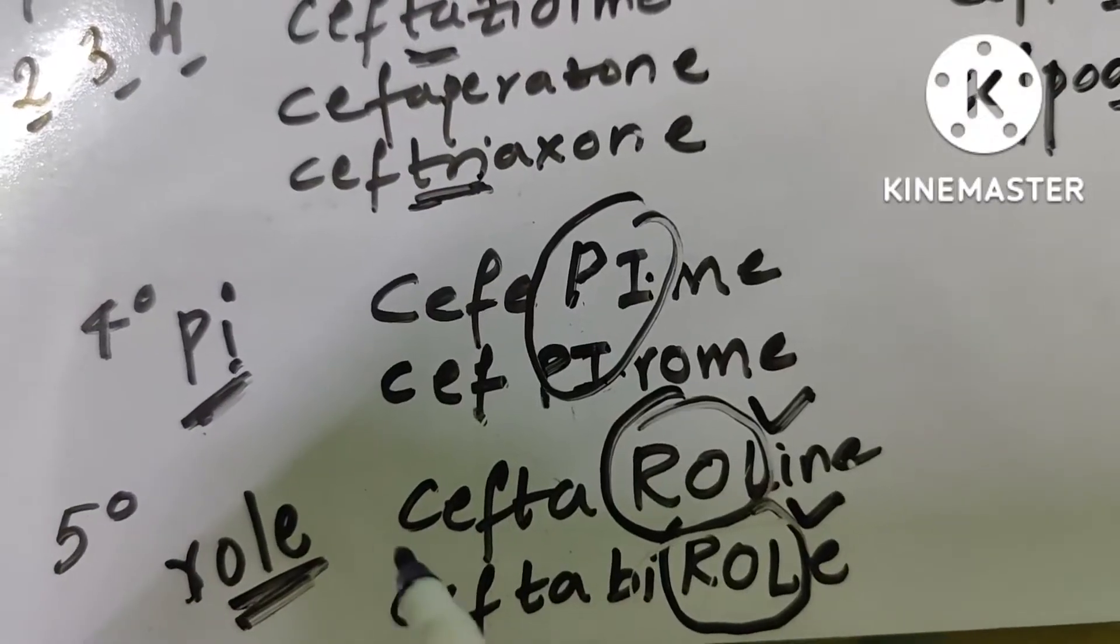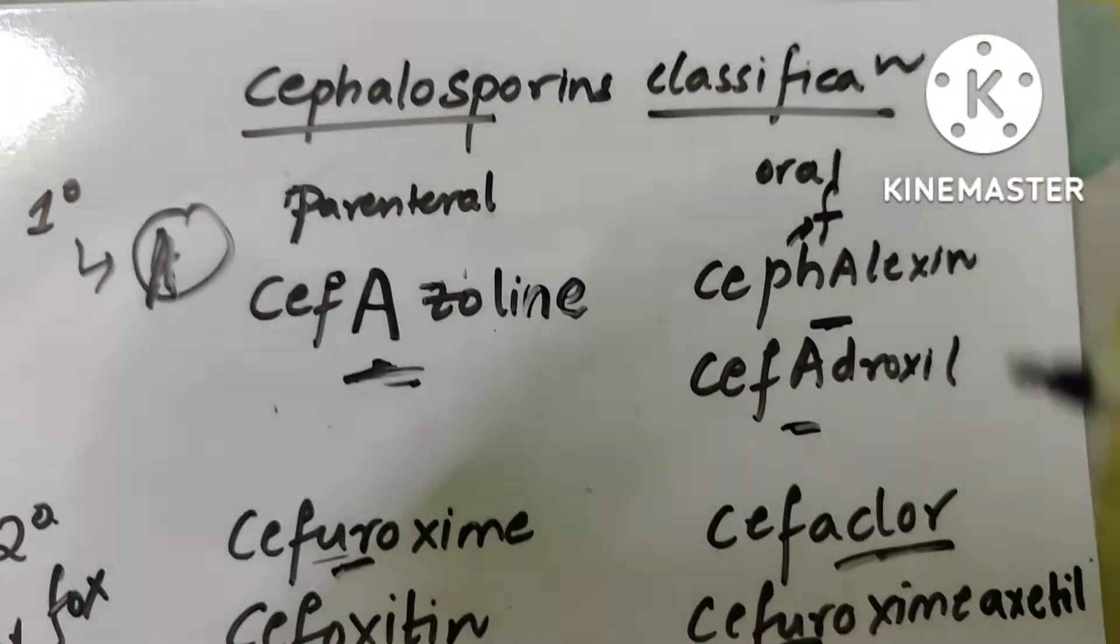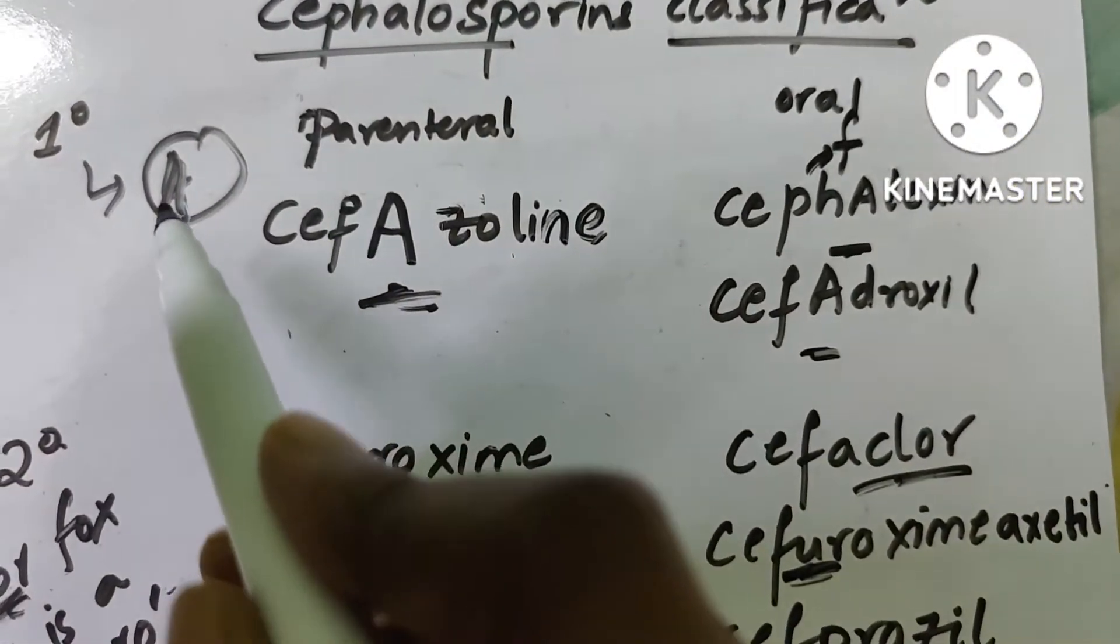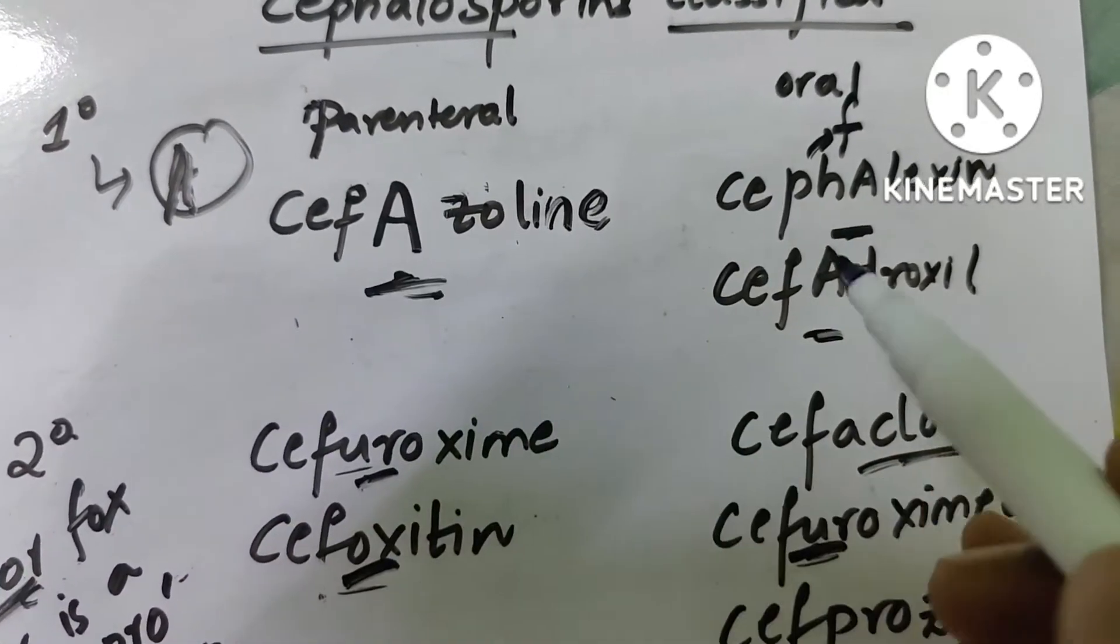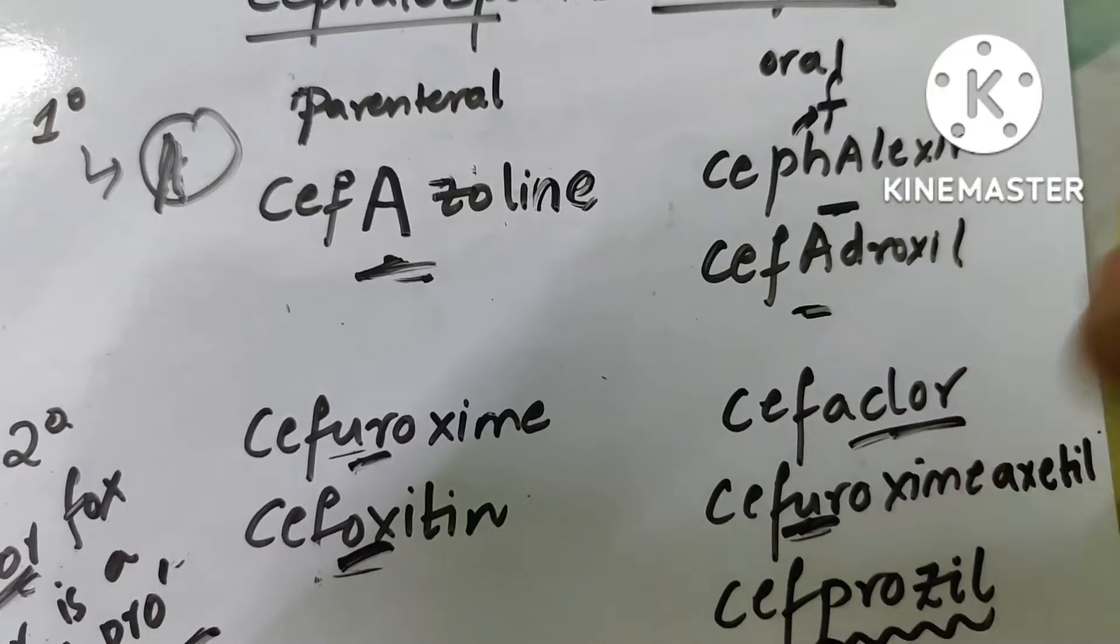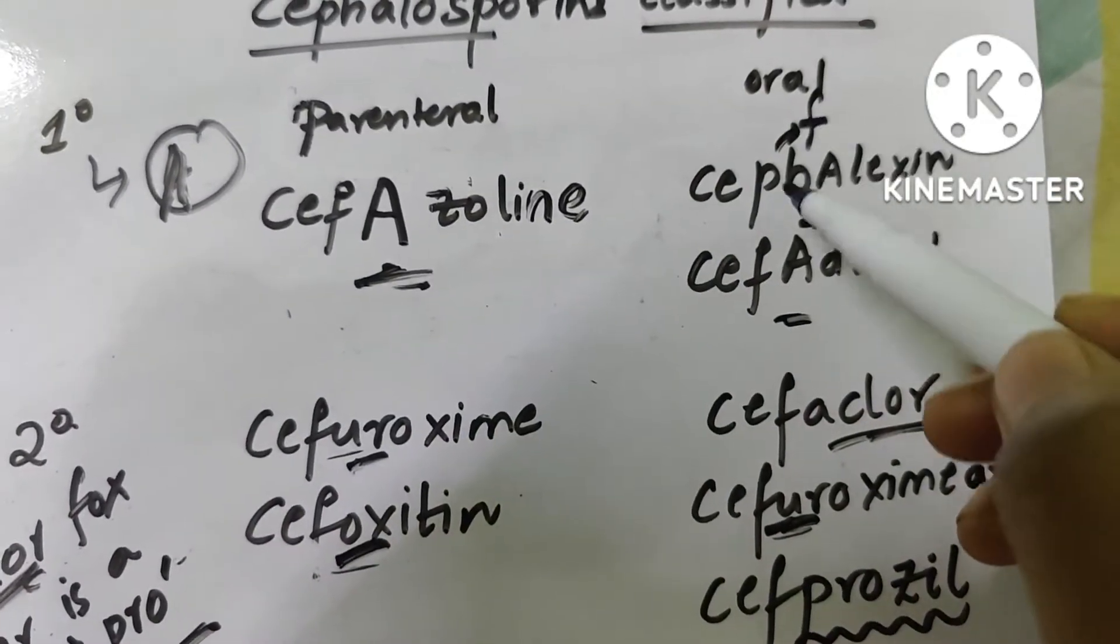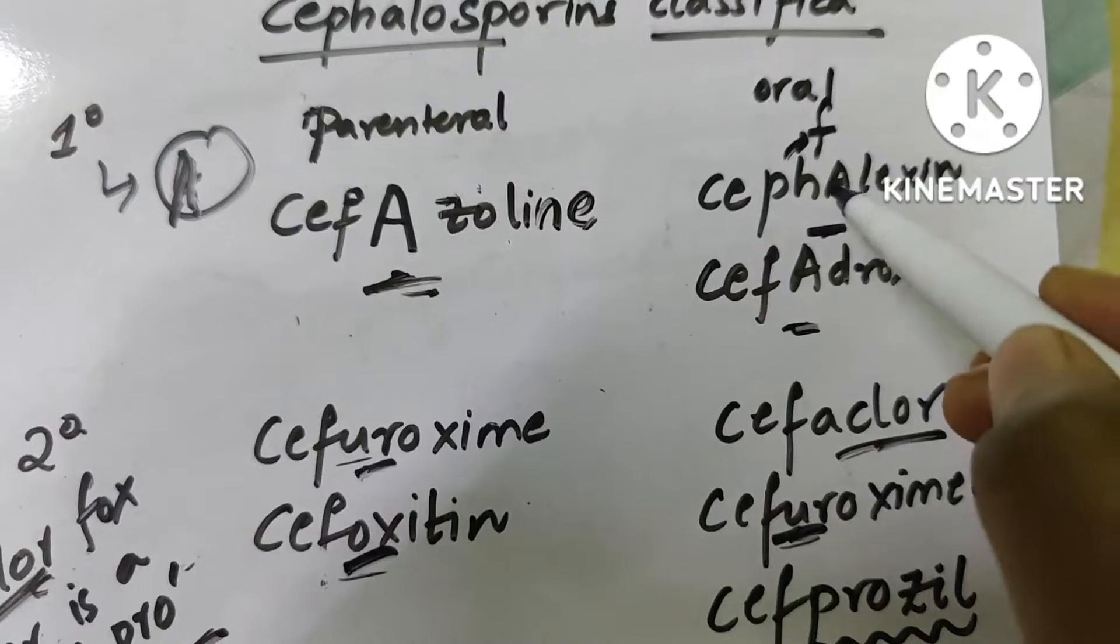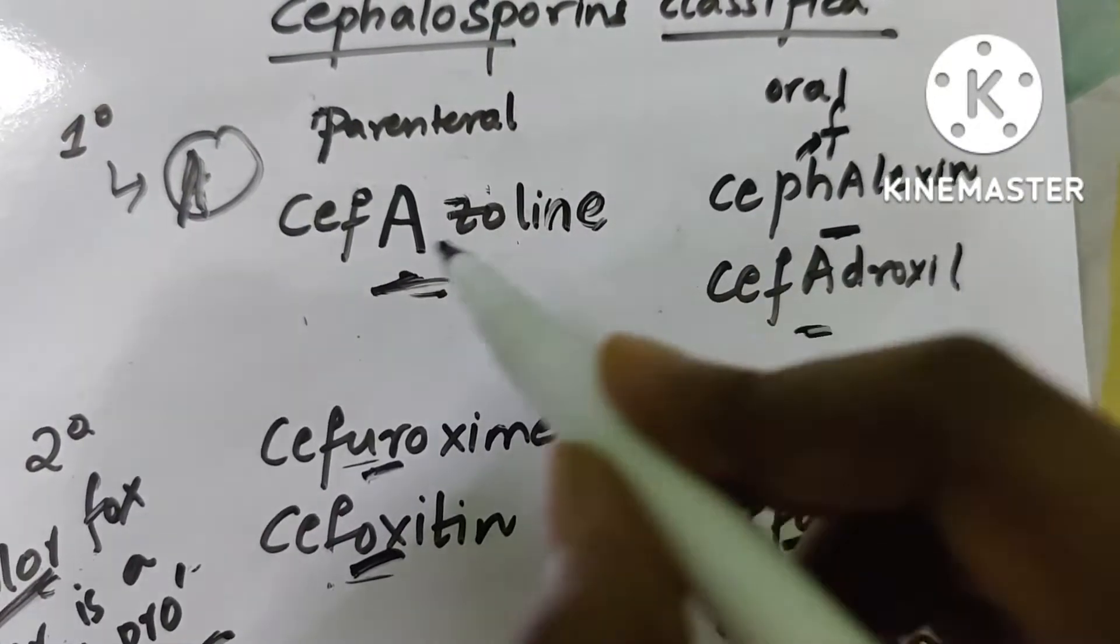Now let us go to the first generation. First generation has letter 'a' in it, letter 'a' in the fourth position - that is cephalexin, cephalothin, and cephaloxin. Here 'ph' is pronounced as 'f', so take it as a single letter only. Take fourth position 'a', 'a', and 'a' - that is first generation.